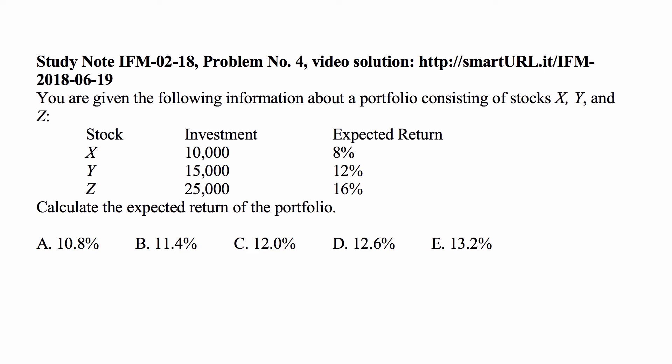The main observation is that the expected return of the portfolio is the market value weighted average of the expected returns of the components of the portfolio. The total value of the portfolio is 50,000. So investment X is 10 over 50, so 20 percent of the portfolio. Investment Y is 15 over 50, so 30 percent of the portfolio. And investment Z is 25 over 50, so 50 percent of the portfolio.